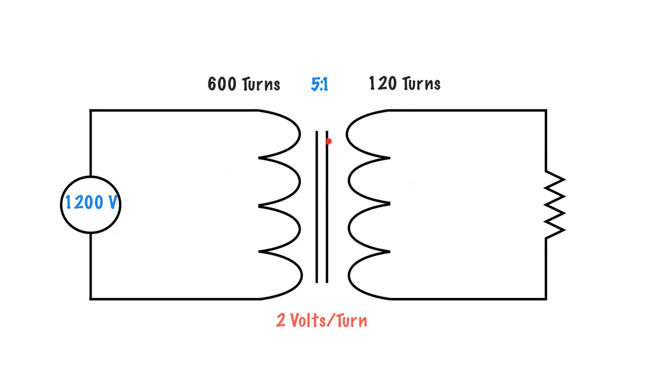The lines of inductance are being cut over on this side, and so we're getting the same volts per turn on the secondary side. So 2 volts per turn that we use to calculate it off the primary, 2 volts per turn times 120 turns will give me my secondary voltage, which is 240 volts. So that's the volts per turn method.